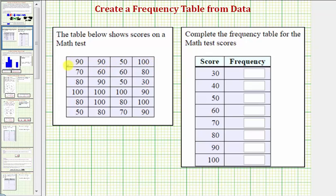Notice here we have 90, 90, 50, 100. So marking those: 90, 90, 50, 100. The next row we have 70, 60, 60, 80. So 70, 60, 60, 80.